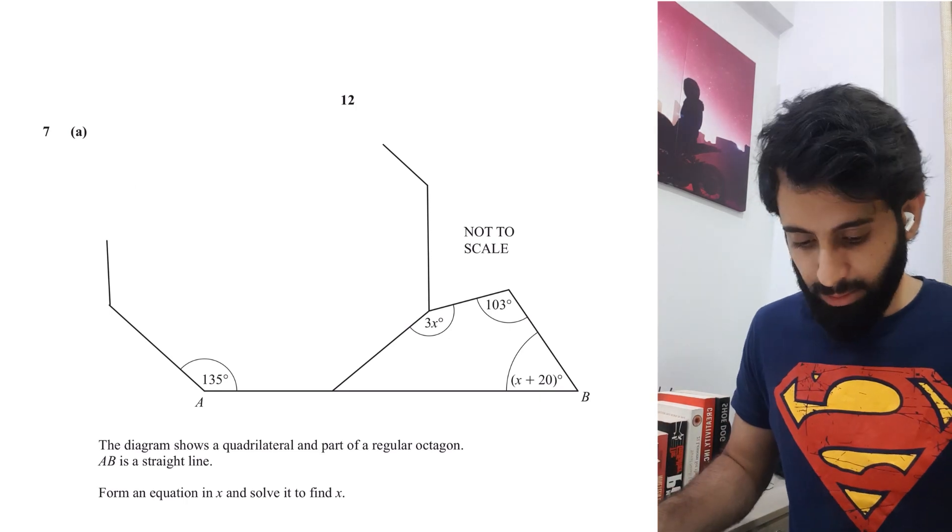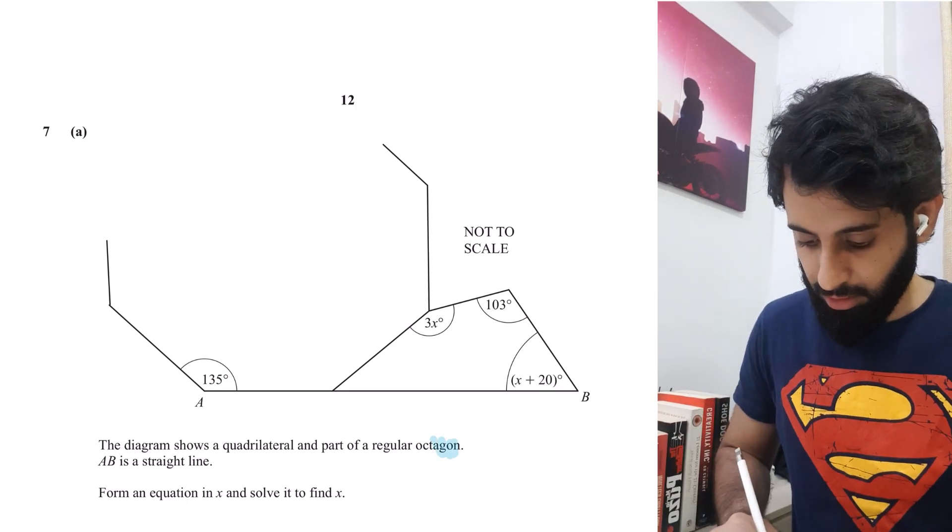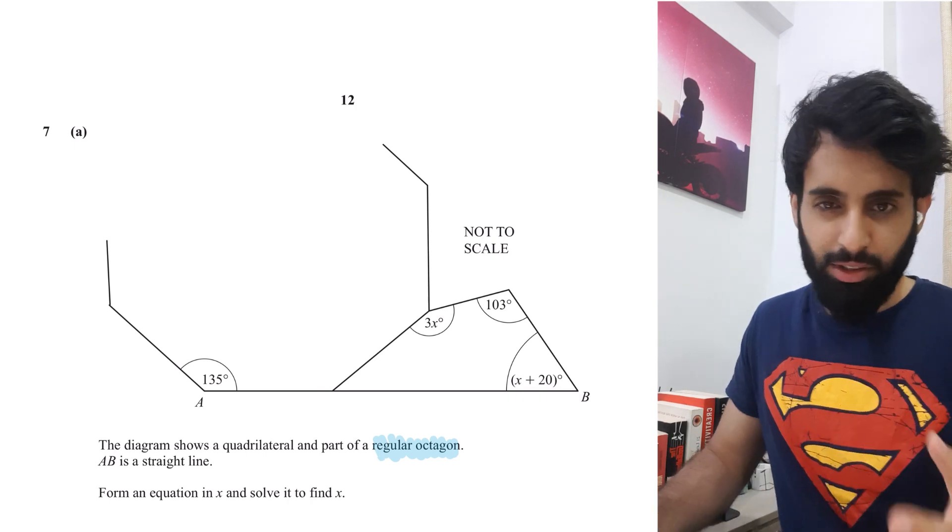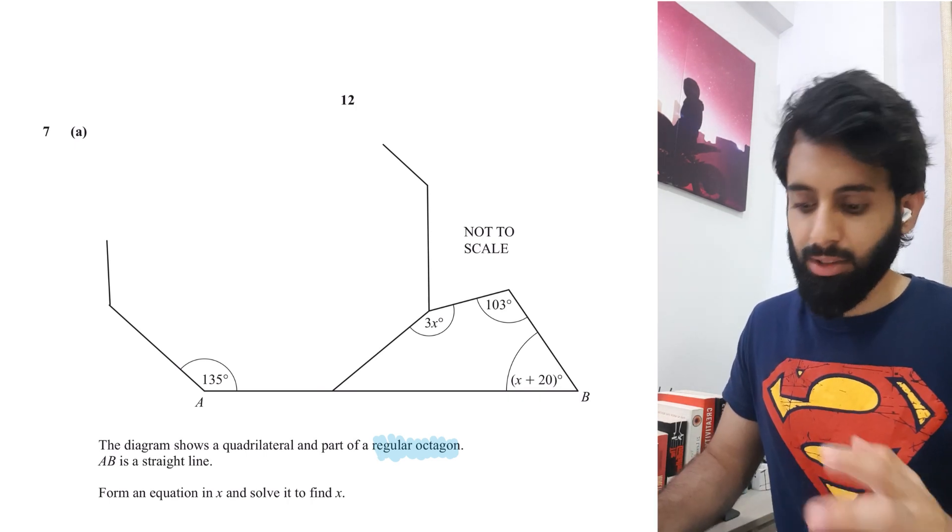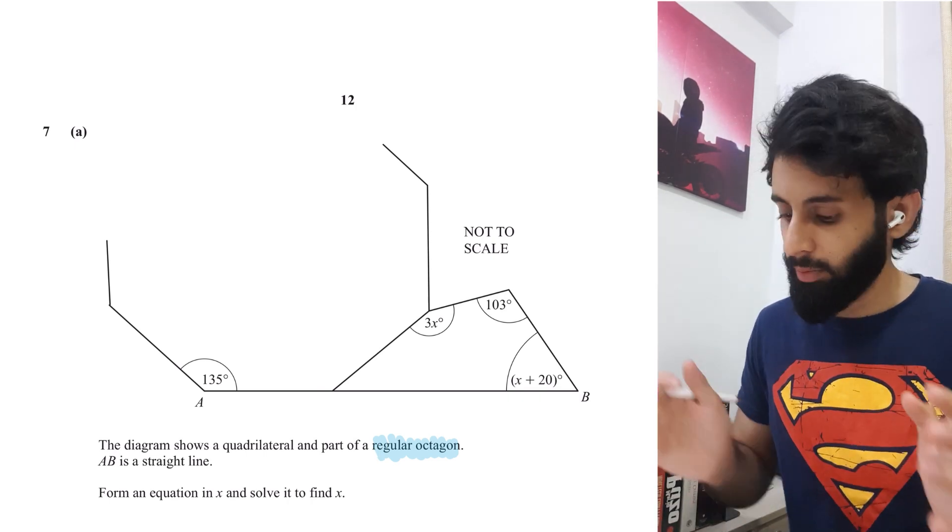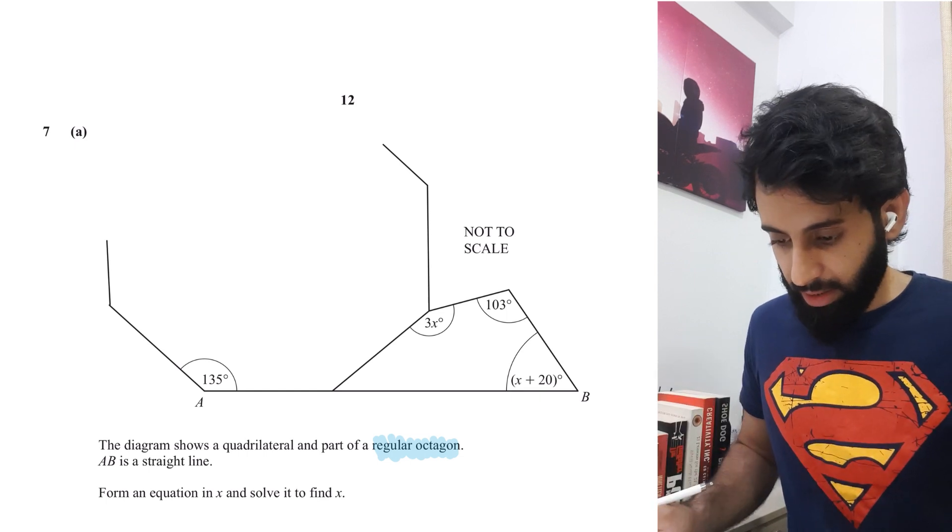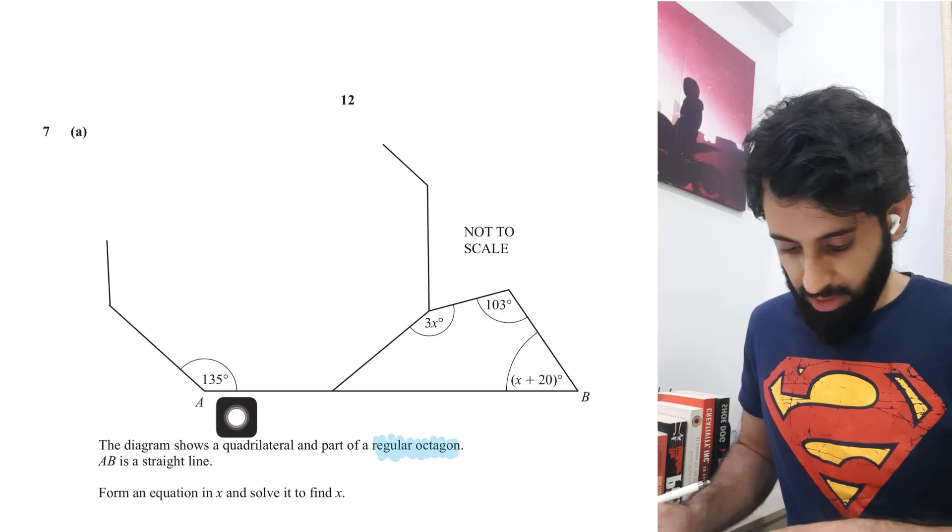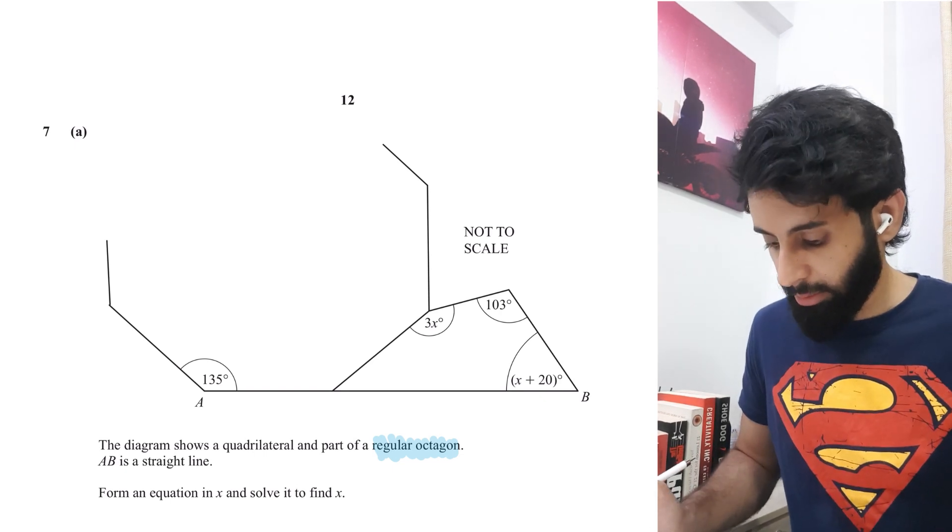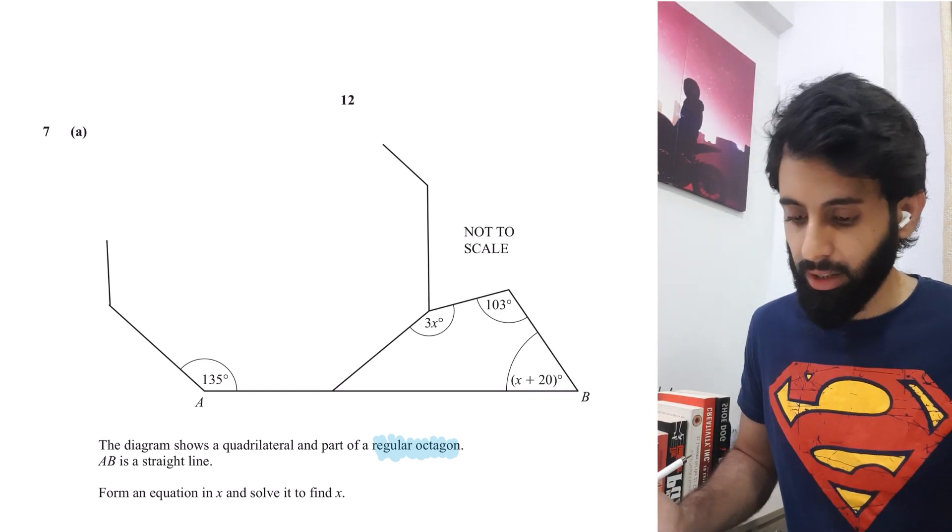The diagram shows a quadrilateral and part of a regular octagon. Regular octagon should instantly tell you that all the angles and sides are of the same value. AB is a straight line - there may be a reason the question tells us that, we'll find out. Form an equation in x and solve it to find x.